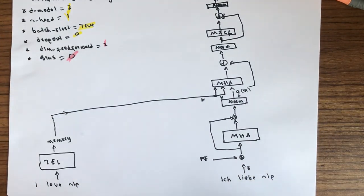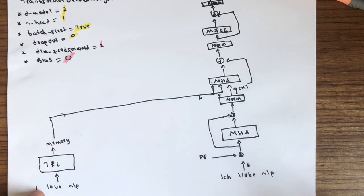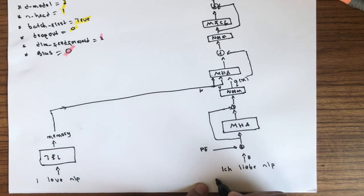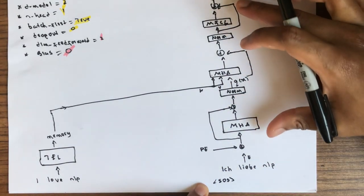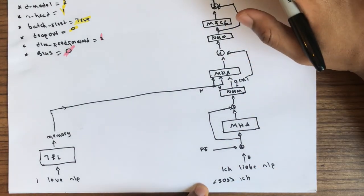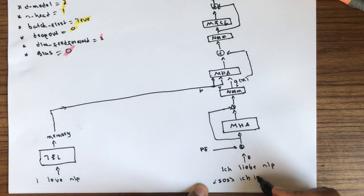Okay, so what really happens here is at the beginning, to translate from English to German, you start with an SOS token. You push it through this neural network with the hope you get 'Ich.' Then you push this SOS with 'Ich' through this neural network with the hope you get the word 'liebe.'